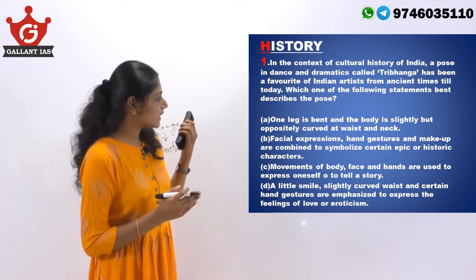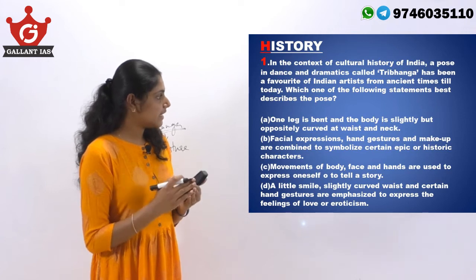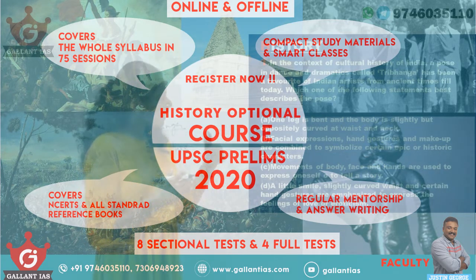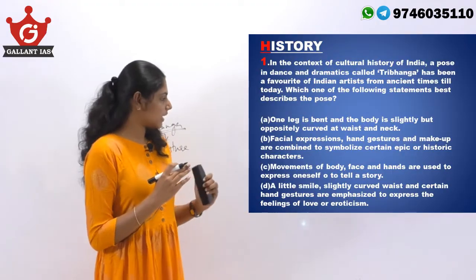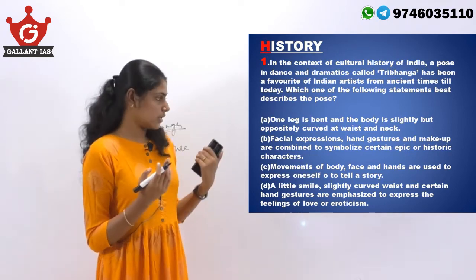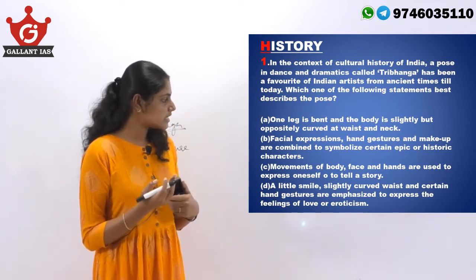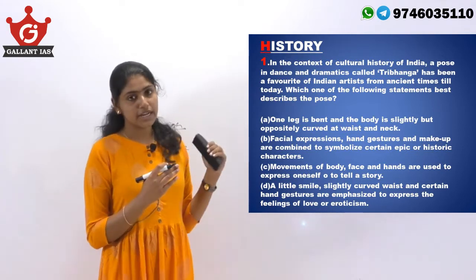Option A states: one leg is bent and the body is slightly but oppositely curved at waist and neck. Yes, this is the right statement. Option B — facial expressions, hand gestures, makeup are combined to symbolize certain epic or historic characters — is not the answer. Option C — movement of body, face and hands are used to express oneself to tell a story — is not the answer. Option D — little smile, slightly curved waist and certain hand gestures emphasized to express feelings of love or eroticism — is also not the answer. Our answer is option A.